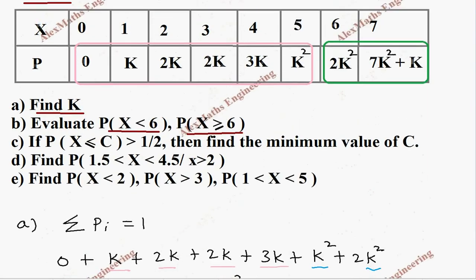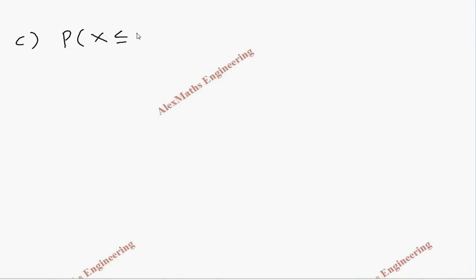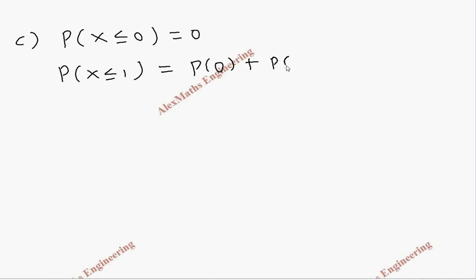In the third subdivision, we find the minimum value of c if P(X ≤ c) > 1/2. We calculate cumulative probabilities from the start. P(X ≤ 0) = 0. P(X ≤ 1) = P(0) + P(1) = 0 + k = k = 1/10, but we are looking for greater than 1/2.